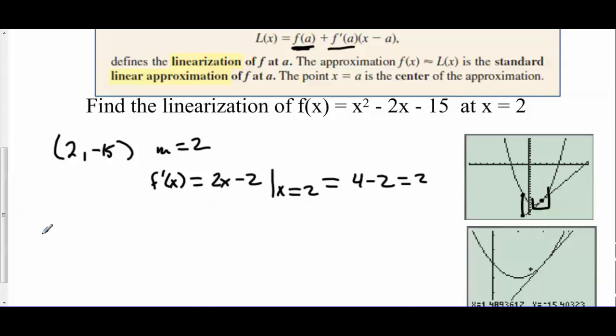Now the equation of the line, the linearization, is y + 15 = 2(x - 2). Now what they've done here is they've just added the y value over. So we have y = -15 + 2(x - 2).